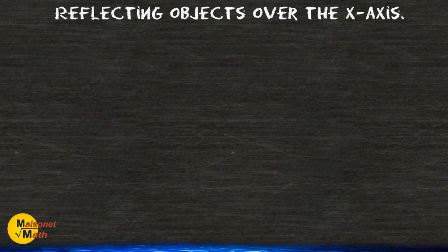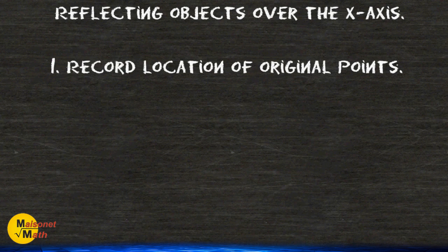In this tutorial we are going to practice reflecting an object over the x-axis. The first thing that we are going to do is record the location of our original points.